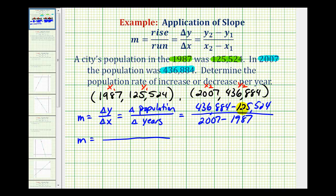So for the change in population, this difference is 311,360. And for the change in years, this is equal to 20.